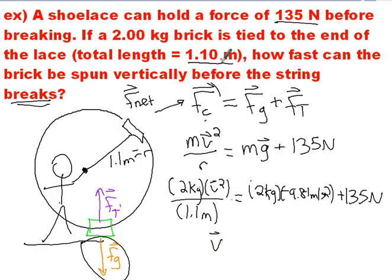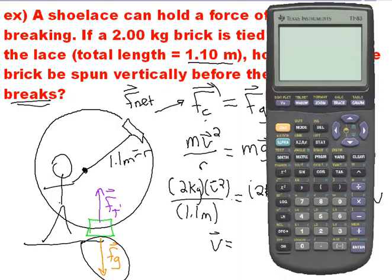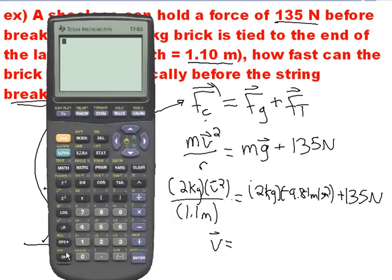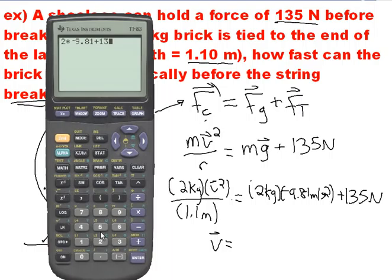So now I can go and I can type it all through my calculator. So out comes the fancy graphing calculator. Let's type this through. So I'm going to start by going 2 times negative 9.81 plus 135. Okay, so there's my whole right-hand side of the equation. Now I'm going to times that by 1.1 to move the denominator over to the other side. I'm going to divide it by 2 to get v squared by itself, and then I'm going to square root.